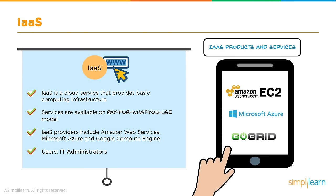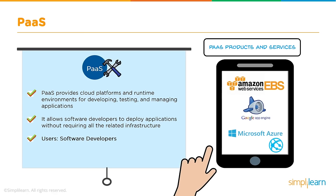Let's talk about IaaS in a bit more detail. IaaS gives you basic computing infrastructure. It's based on a pay-for-what-you-use model, and some of the big cloud providers are AWS, Azure, and Google. The users here are generally IT admins. In PaaS, the provider gives you a platform or a runtime environment for developing, testing, and managing applications. It's platform-ready — you buy the platform, upload your code, and start working on it. It allows software developers to deploy applications without managing the underlying infrastructure, and the primary users of PaaS are software developers.